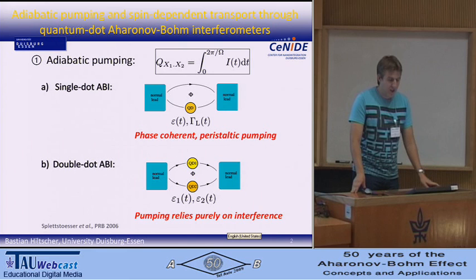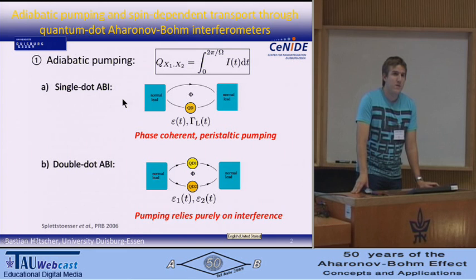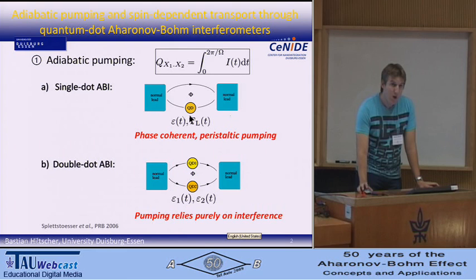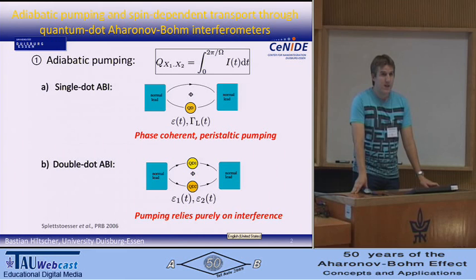We are considering two different systems. The first one is an Aharonov-Bohm interferometer where a quantum dot is embedded in the lower arm. Here we have the time-dependent parameters epsilon, which is the mean dot level, and gamma L, which is the tunnel coupling strength between the left lead and the quantum dot. We find that adiabatic pumping is phase-coherent on the one hand and peristaltic on the other hand. What we exactly mean by that, I can tell you if you come to my poster.